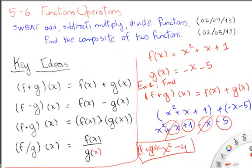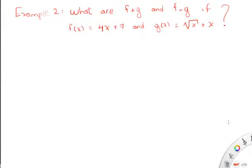Okay, and this was a very rushed example, so I'm actually going to get into more detail as to how to combine this. So let's explore an example in more detail. In this example, they're asking us what are f plus g and f minus g if f of x equals 4x plus 7, and g of x equals the square root of x plus x. So we have two different problems going on here.